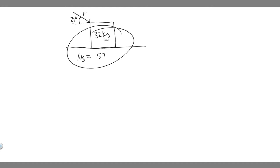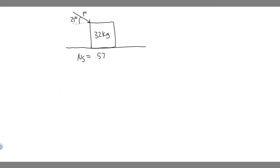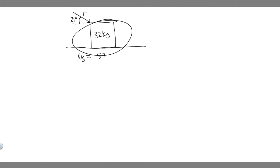As usual, you always want to draw what's going on. So we have this crate, which is 32 kilograms, and we're going to be applying a force that's going to be 21 degrees below the horizontal. We also know that the coefficient of static friction between the floor and the crate is 0.57. The way we're going to solve this problem is first by labeling the forces acting on it — just draw the free body diagram. So we have the force of gravity, which is just mg, the weight force.